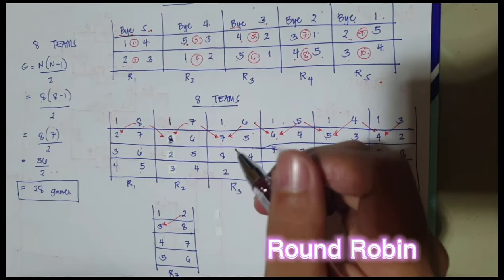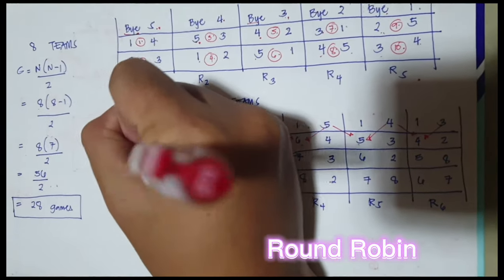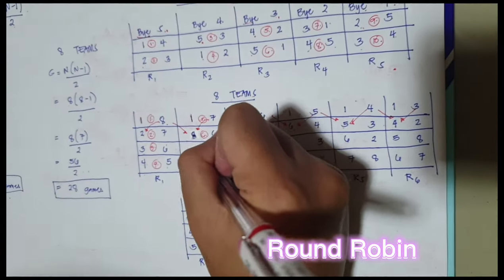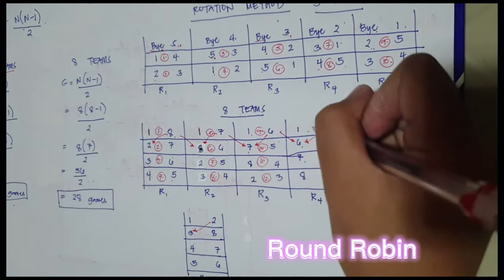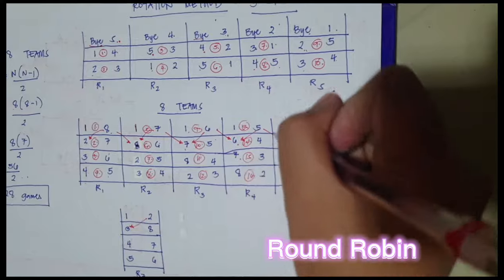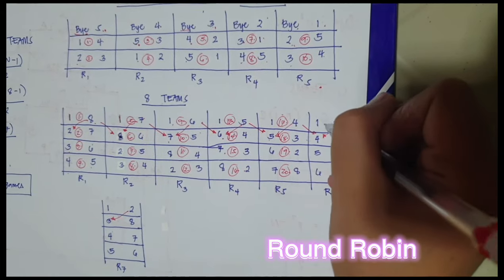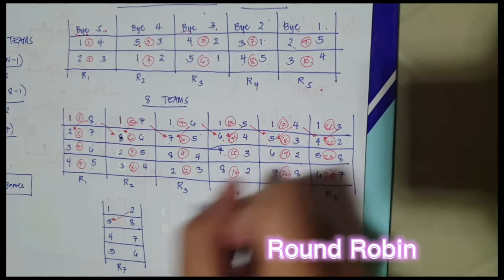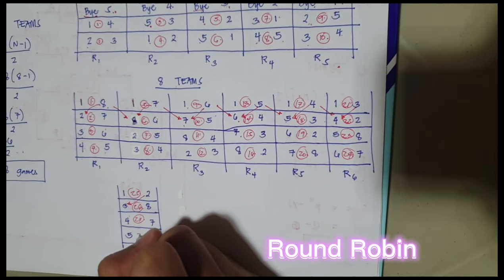Next is we're going to assign the game numbers. So this is game number 1, 2, 3, 4, 5, 6, 7, 8, 9, 10, 11, 12, 13, 14, 15, 16, 17, 18, 19, 20, 21, 22, 23, 24, 25, 26, 27, 28.